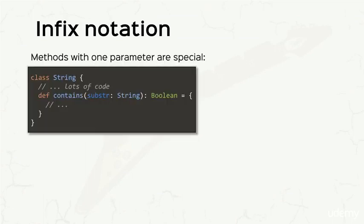The first thing that we will learn in this video is that methods with one parameter have a special property in Scala. Take a look at this block of code, where we simulate the class String, which is already pre-written. Take a look at the method contains, which receives a string as a parameter and returns a boolean.